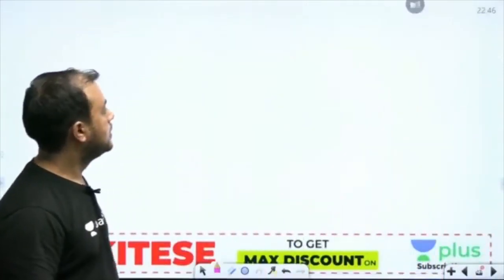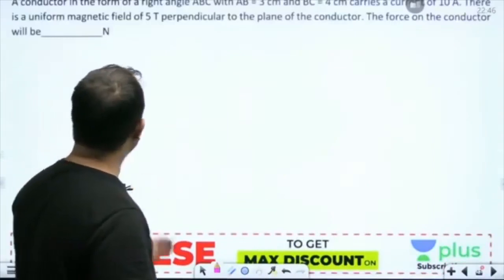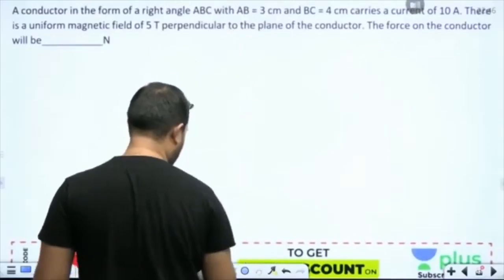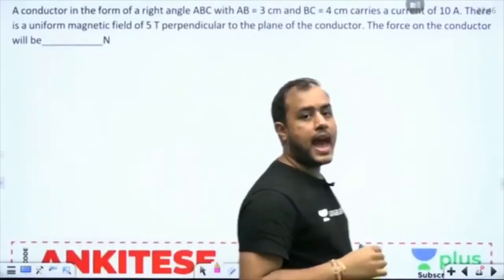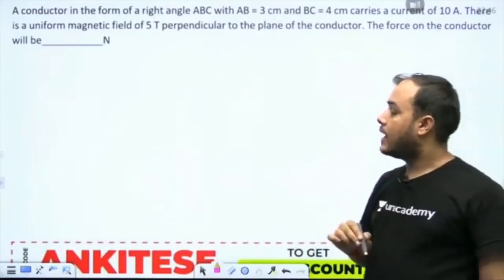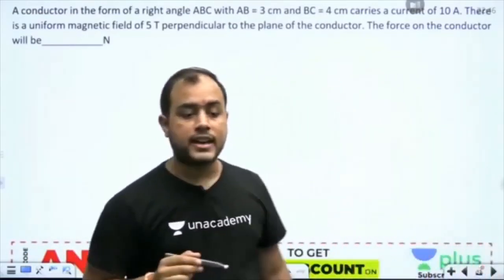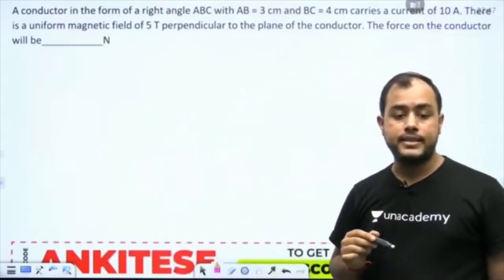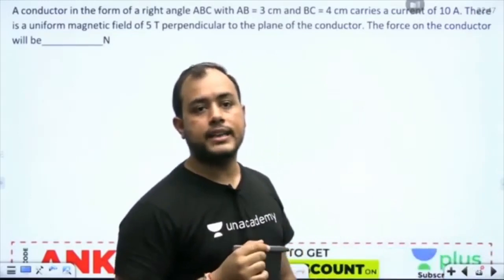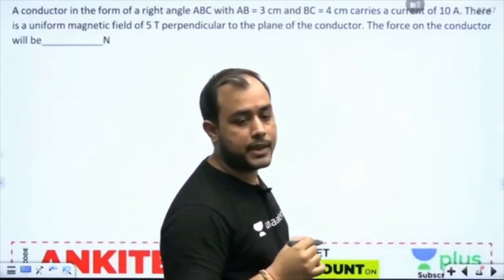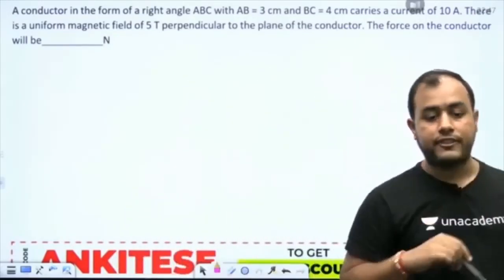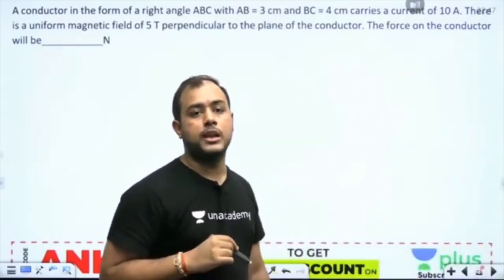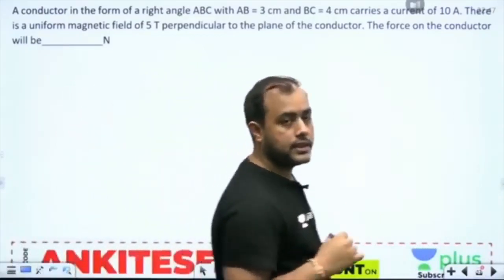Try the next one — it is NAT type. A conductor in the form of a right angle ABC with AB equal to 3 cm, BC equal to 4 cm, carries a current of 10 ampere. There is a uniform magnetic field of 5 tesla perpendicular to the plane. Find the force.